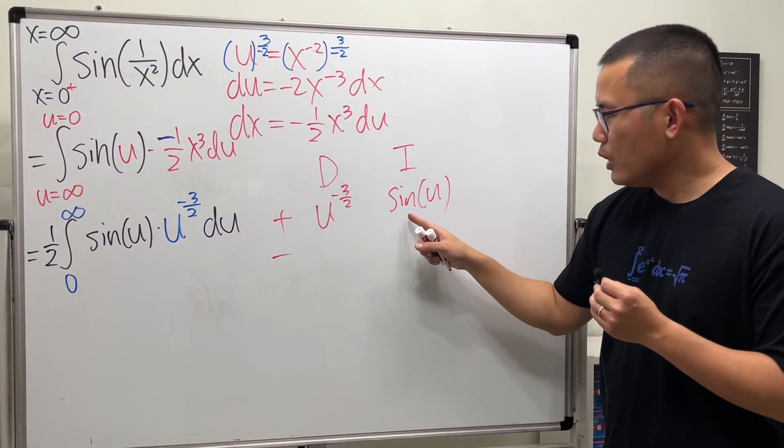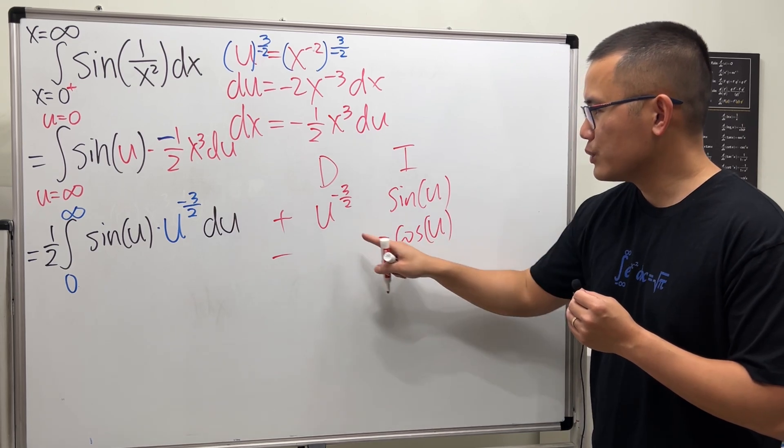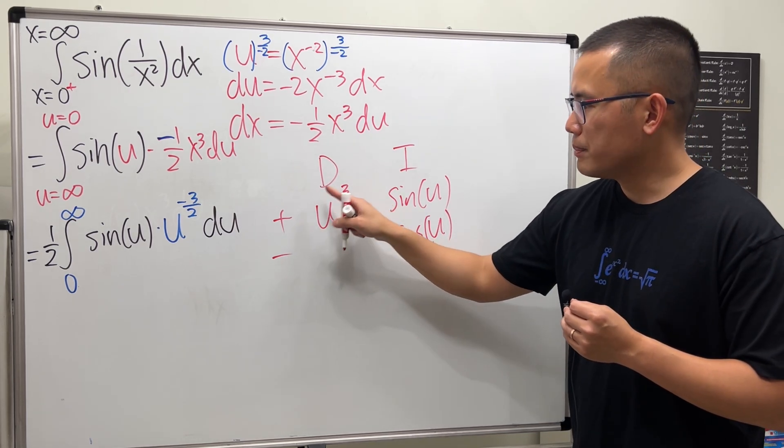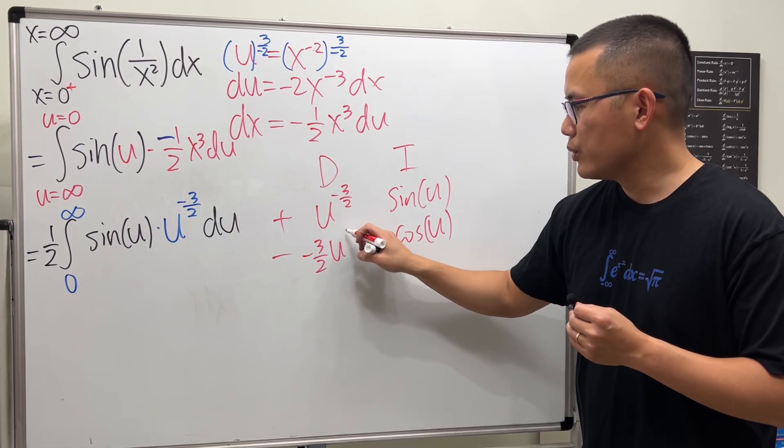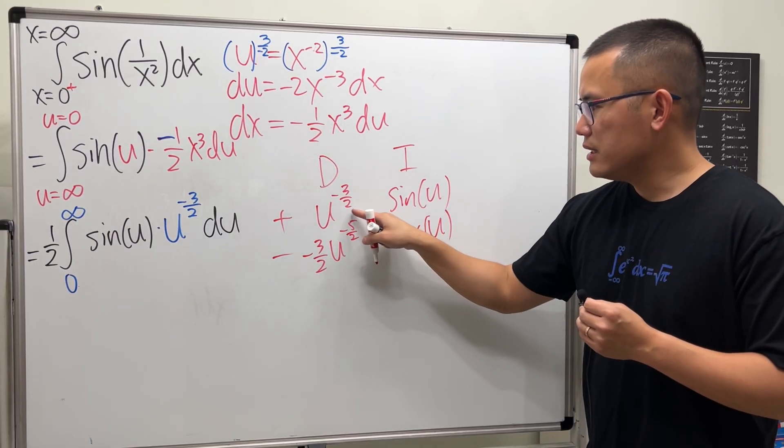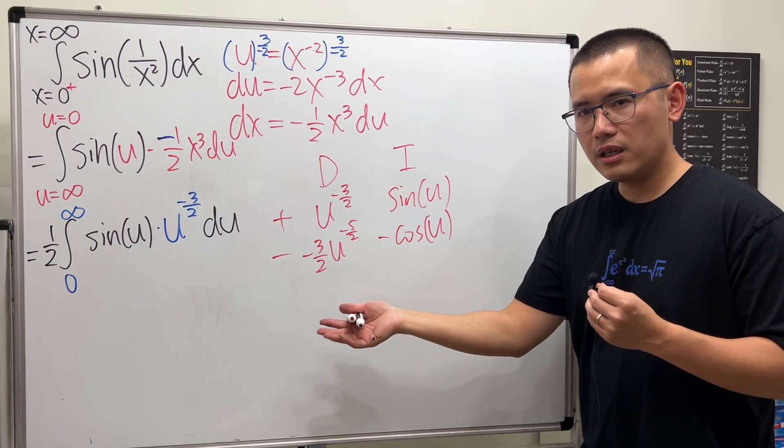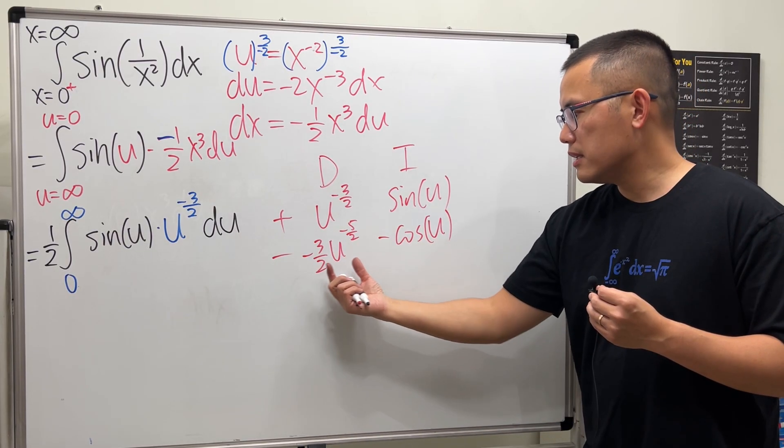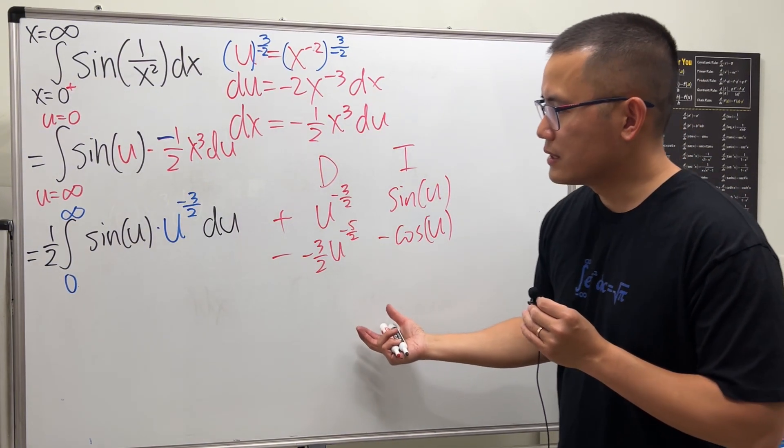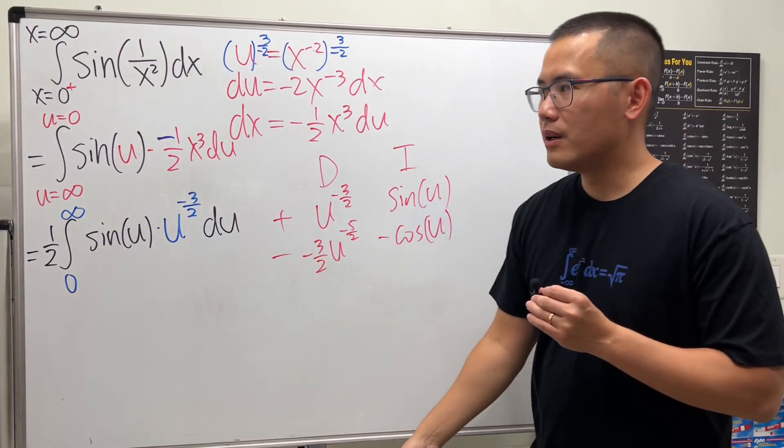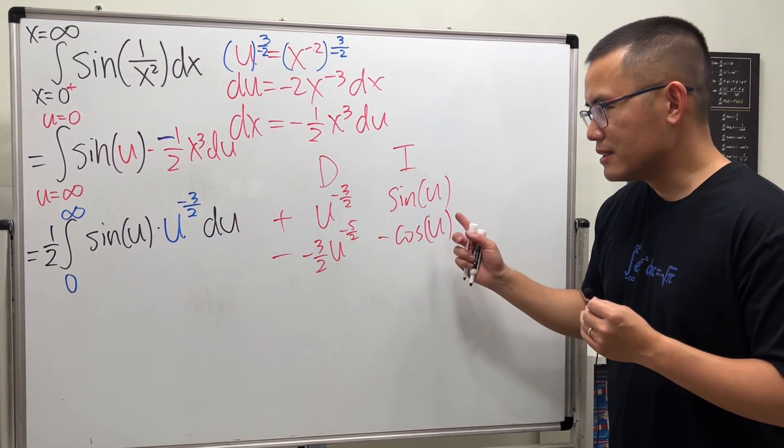But if we integrate sine u, that's okay. However, once we differentiate this, put the power to the front and minus 1, we get negative 3 over 2, u to the negative 5 over 2. This times that is the first part of the answer. That seems okay. But I will have to multiply this and that and put that itself as integral, which is worse than the original here. So, I don't think this is the way to go.